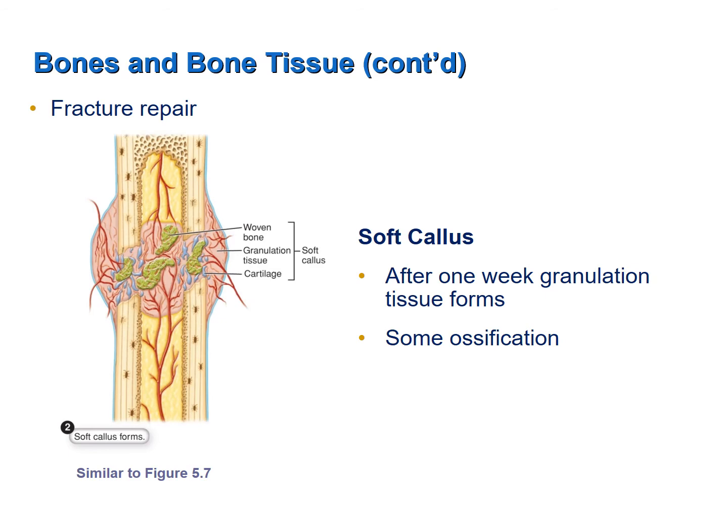After about one week has passed, the repair process is well underway. Granulation tissue forms, which is basically a mixture of the extracellular components of bone, including collagen fibers and some ossification. The mixture of granulation tissue and ossification forms what is called a soft callus. The soft callus helps to splint the break, but it cannot bear weight.